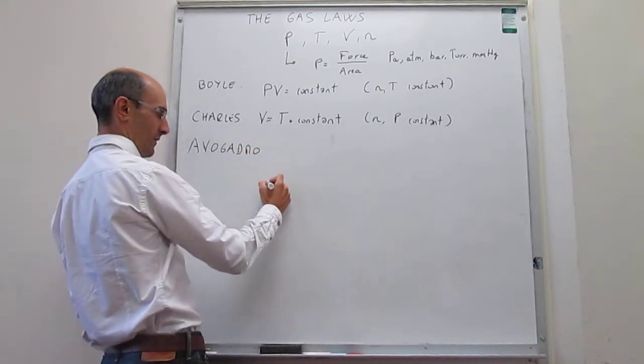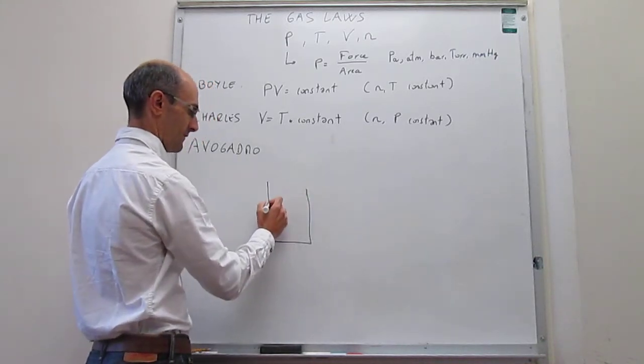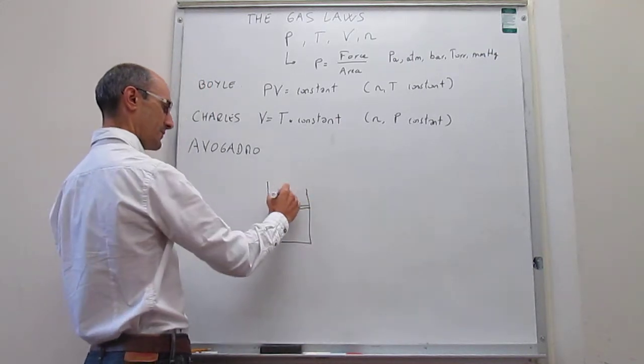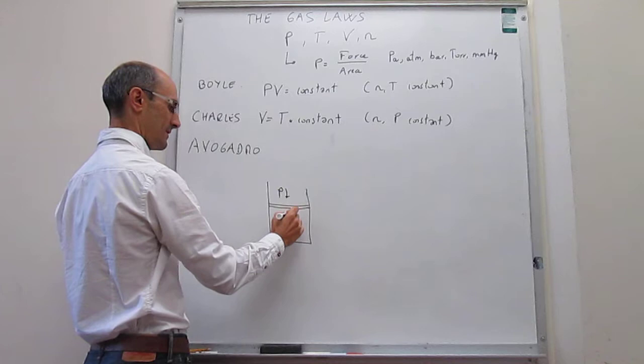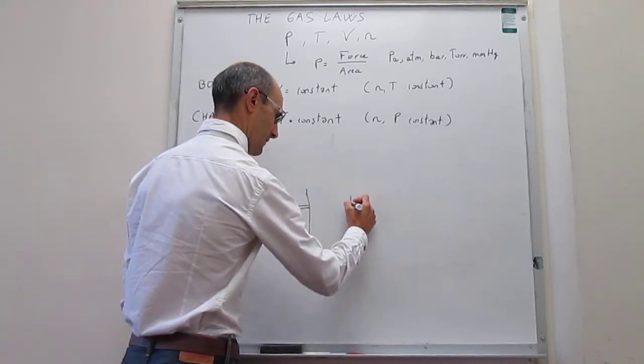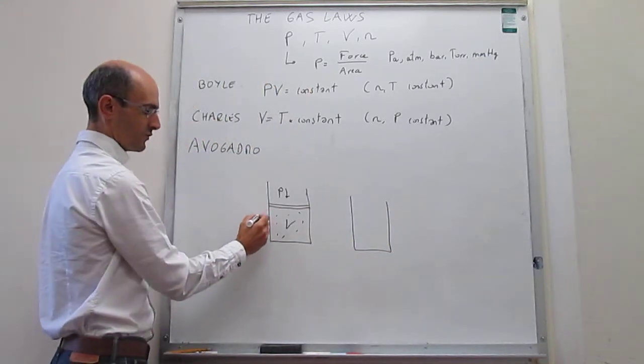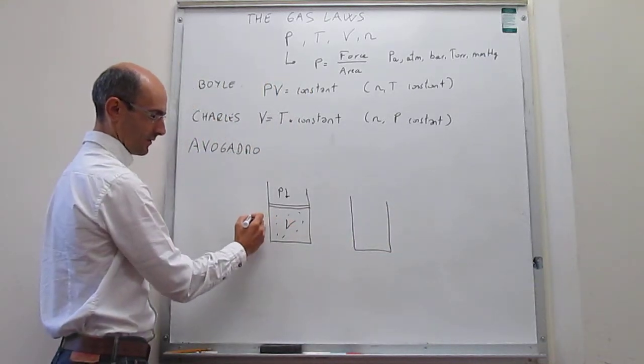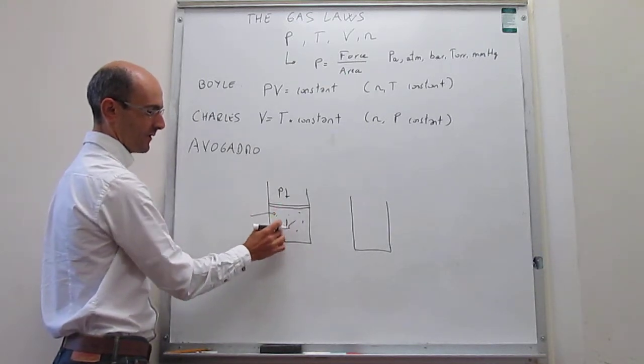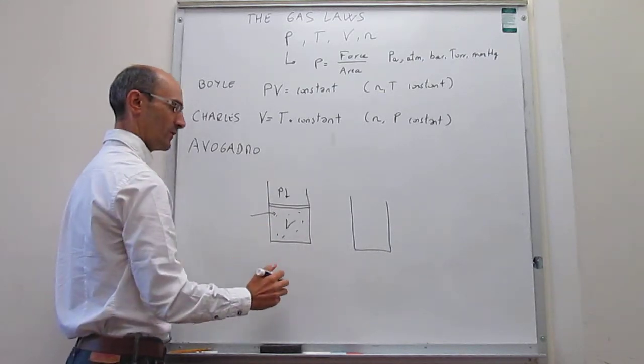So Avogadro, if we remember what the thinking was, is as follows. You have here some pressure. You have your gas, which is occupying some volume. And then the idea is as follows. You now are going to be able to manipulate the amount of gas. And the experiment is to actually increment the amount of molecules that you put into this cylinder.